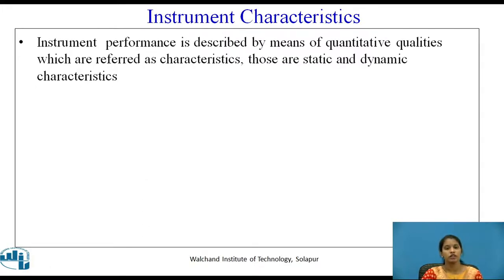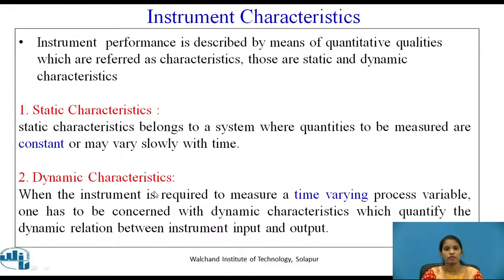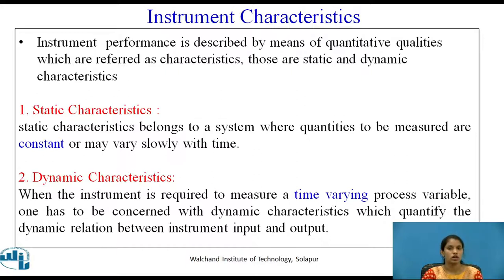Instrument Characteristics. Instrument performance is described by means of quantitative qualities which are referred to as characteristics. Those are static and dynamic characteristics. Static characteristics belong to a system where quantities to be measured are constant or may vary slowly with time. In dynamic characteristics, the instrument is required to measure a time-varying process variable — when the process variable is not constant and varies with respect to time, it is concerned with dynamic characteristics, which quantify the dynamic relation between instrument input and output.